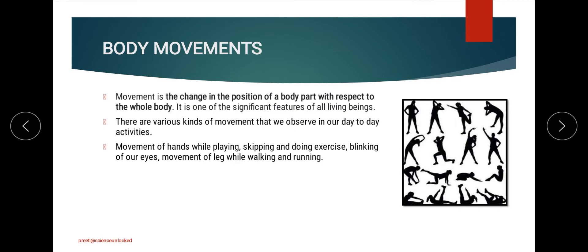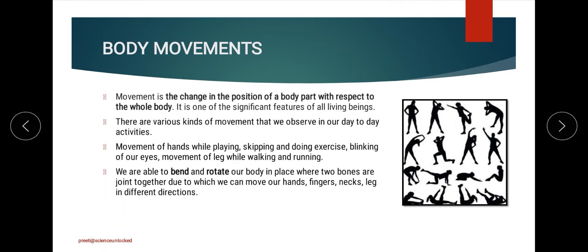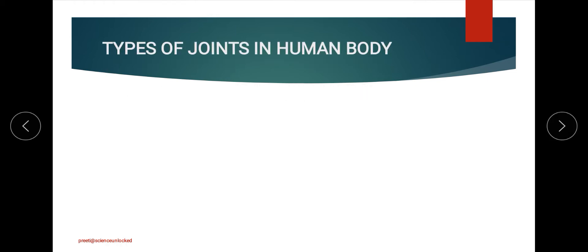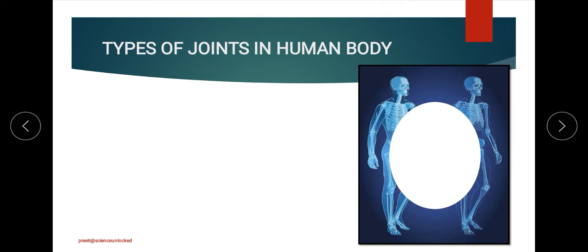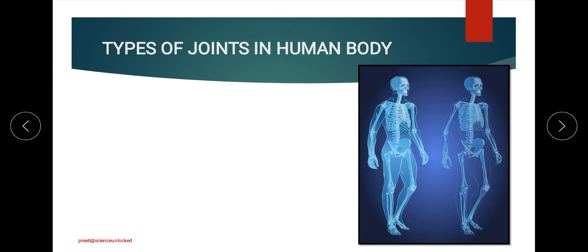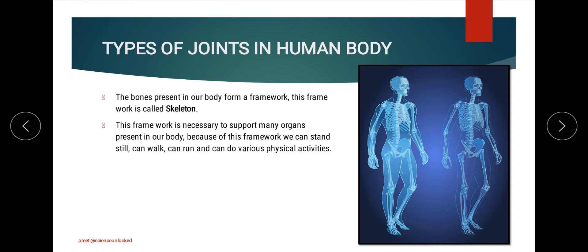There are different activities and movements we observe in day-to-day life, involving bending, rotating, and changing the overall position using different body parts. For hard structures like bones, all these movements are only possible because of the kinds of joints we have in our body, which we can observe through resources like X-rays that show the internal structure of bones and joints.